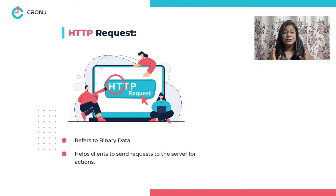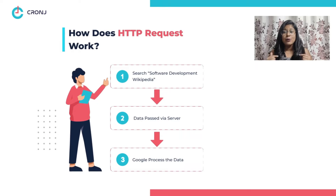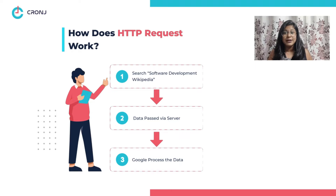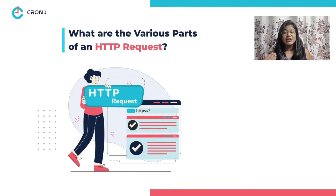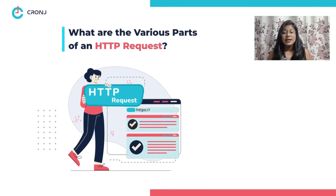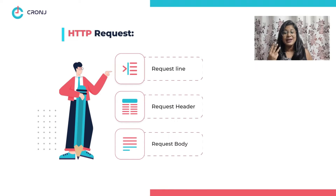For example, if I want to access some information about software development from Wikipedia, I will search for 'software development Wikipedia' on the Google search bar and press the search button. The information will be passed on to the server for processing and delivering the results. This is what an HTTP request is all about.